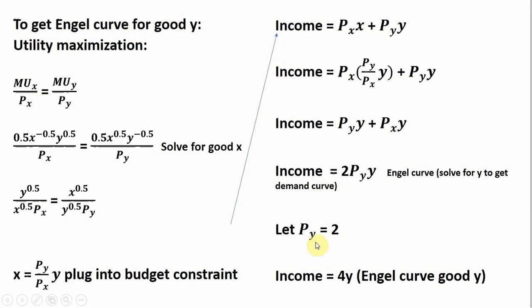Fixing prices at $2 for good Y, we get an Engel curve for good Y where income equals 4Y. That's it. I hope you found this beneficial.